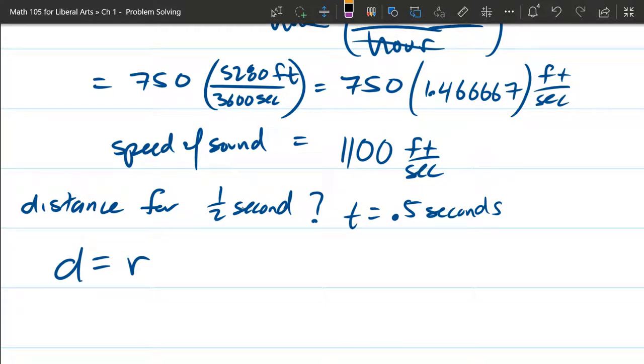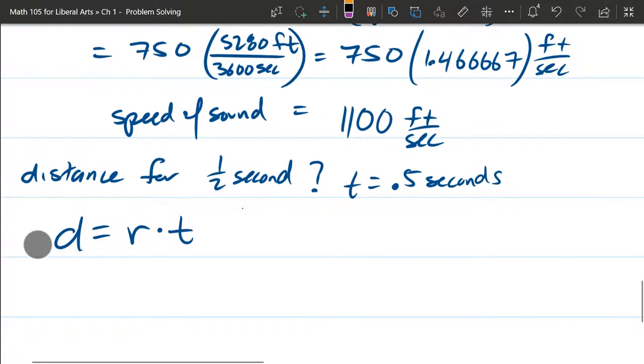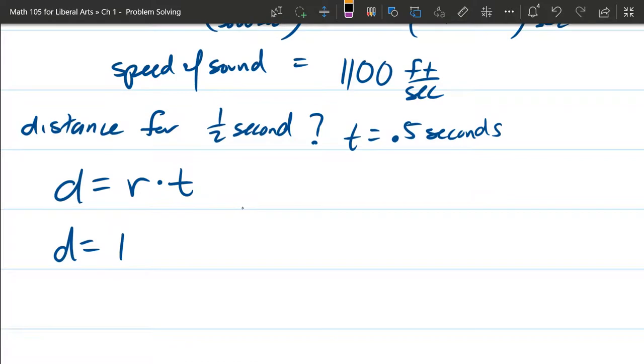Sometimes you're going to write a little x in for multiplication. I personally don't like to do that. I could use a dot, that's a little bit more common. So we're going to say the distance is the rate. What's the rate? The rate is the speed, which is right there on the top of the screen, 1,100. I am including the units on purpose. That's the rate. What's the time? Also near the top of the screen, 0.5 seconds.